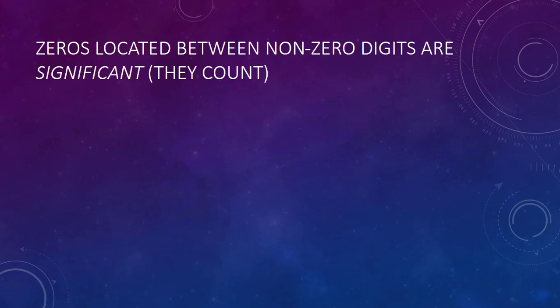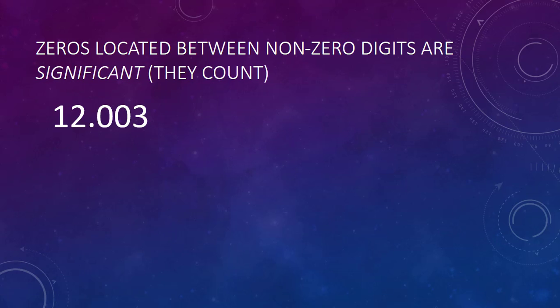Okay, so let's talk zeros — this is where it gets tricky. Zeros located between non-zero digits are significant. So in the number 12.003, these two zeros are in between two non-zero digits, and so they're significant. The one, two, and three are non-zero digits, and so they are significant as well. So in this number we have five significant figures.